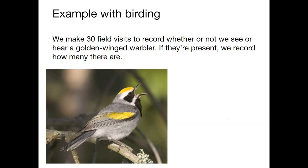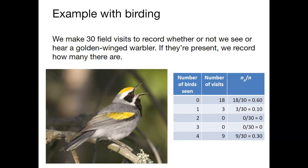We've looked at this example in class. This is the example with birding. Suppose we make 30 field visits, and we record whether or not we see or hear a golden-winged warbler. This is a bird of special concern in a lot of states across the United States. So if we find them, we record how many are there. When we went out, as it turned out, we went out 18 times and didn't find any birds. Our probability, based on relative frequency, is 0.6. When we went out three times, we saw one bird. The probability here is 0.1. We went out zero times and found two birds. We went out zero times and found three birds. And we went out nine times and found four birds for a probability of 0.3. This is an example of the relative frequency approach to assigning probabilities.